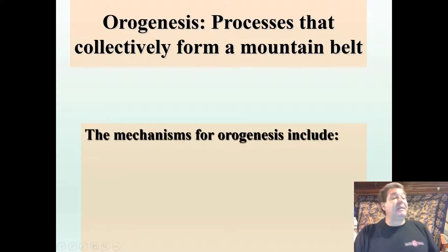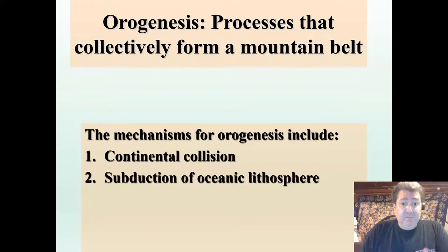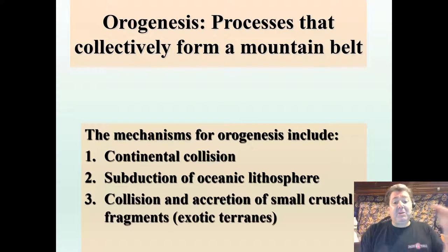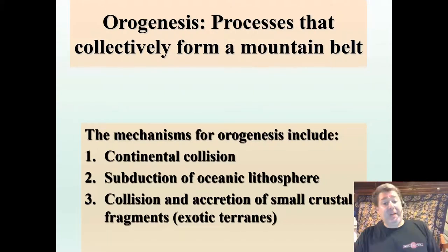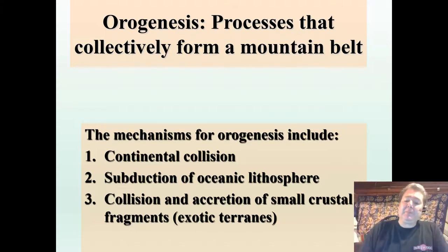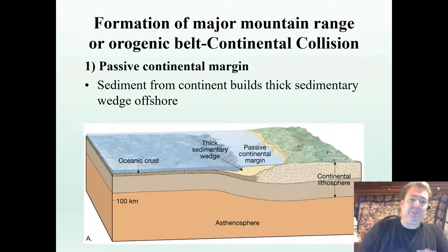Mechanisms for orogenesis include continental collisions — continent and continent — subduction of oceanic lithosphere, and the collision and accretion of small crustal fragments, like Hawaii and similar features floating along and ending up scraped to the side of a continent. It's important to note that all of these occur at convergent plate margins.